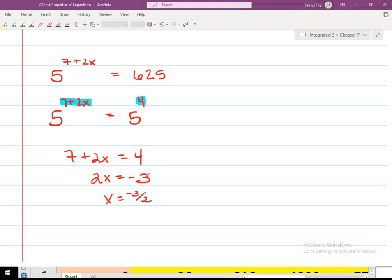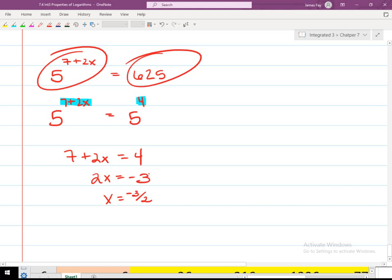And again, if you're ever worried, did I do everything right, do I have the right answer, plug it back in. Put negative 3 halves in up there for your x. So negative 3 halves times 2 is negative 3. What's 7 plus negative 3? 4. So I plug negative 3 halves back in here. This goes 5 to the fourth. Is that the same thing as 6 to the fourth? Yes, it is. So that's nice. So let's go a little bit further.